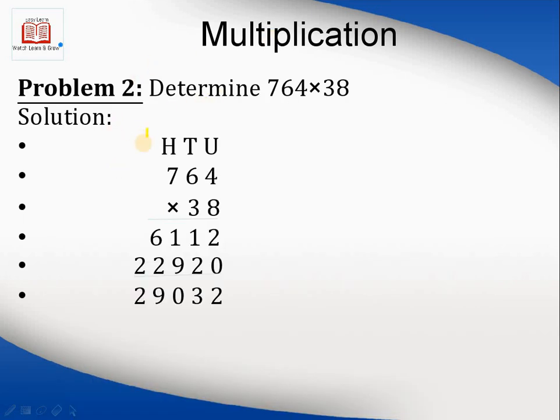This is a more complex case in which two two-digit numbers are multiplied. The result is a three-digit number, so it goes to the hundreds column. When 764 is multiplied by 38: